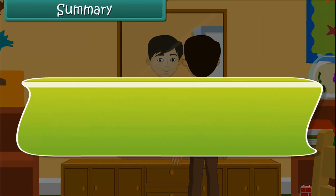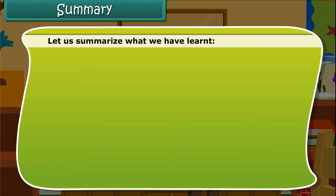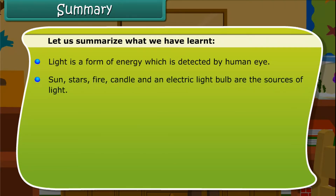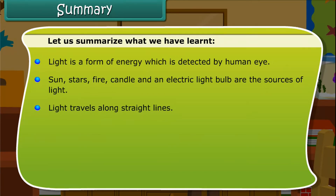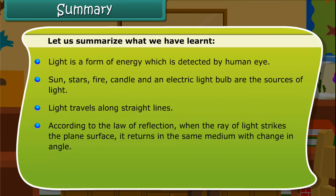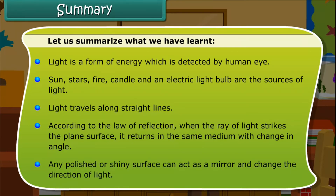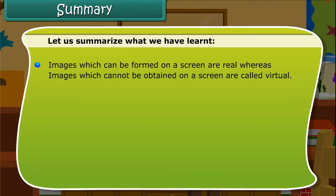Summary. Light is a form of energy which is detected by the human eye. The sun, stars, fire, candle, and electric light bulb are sources of light. Light travels along straight lines. According to the law of reflection, when a ray of light strikes a plane surface, it returns in the same medium with a change in angle. Any polished or shiny surface can act as a mirror and can change the direction of light. Images which can be formed on a screen are real, whereas images which cannot be obtained on a screen are called virtual.